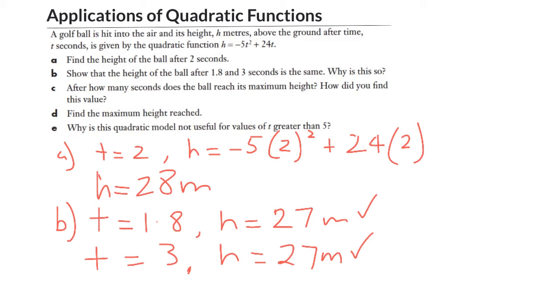But why are they the same? Does this make sense that we've got two different times at the same height? Yes, it actually does. Because again, if we go back to that really basic version of our parabola here, start at the ground, we end up back at the ground. We go up to some maximum height.